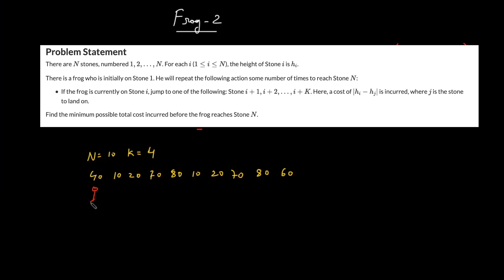If we take this example, if the frog is standing over here, he can only move to four indexes beyond this index. That means up till 80, he can move.